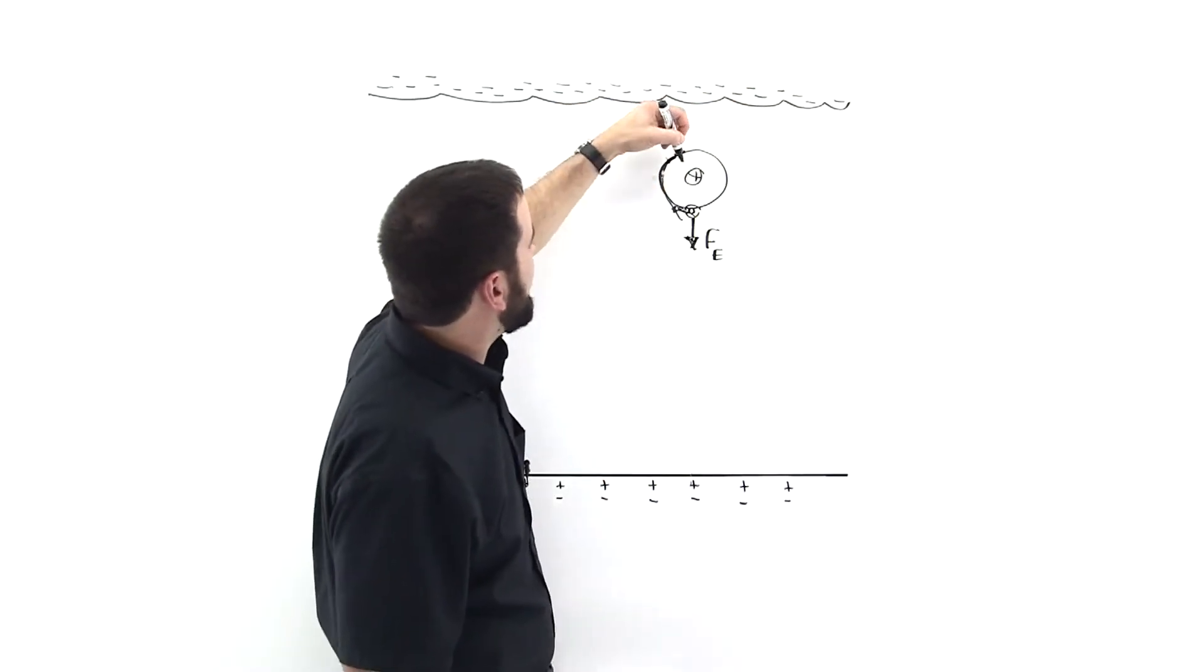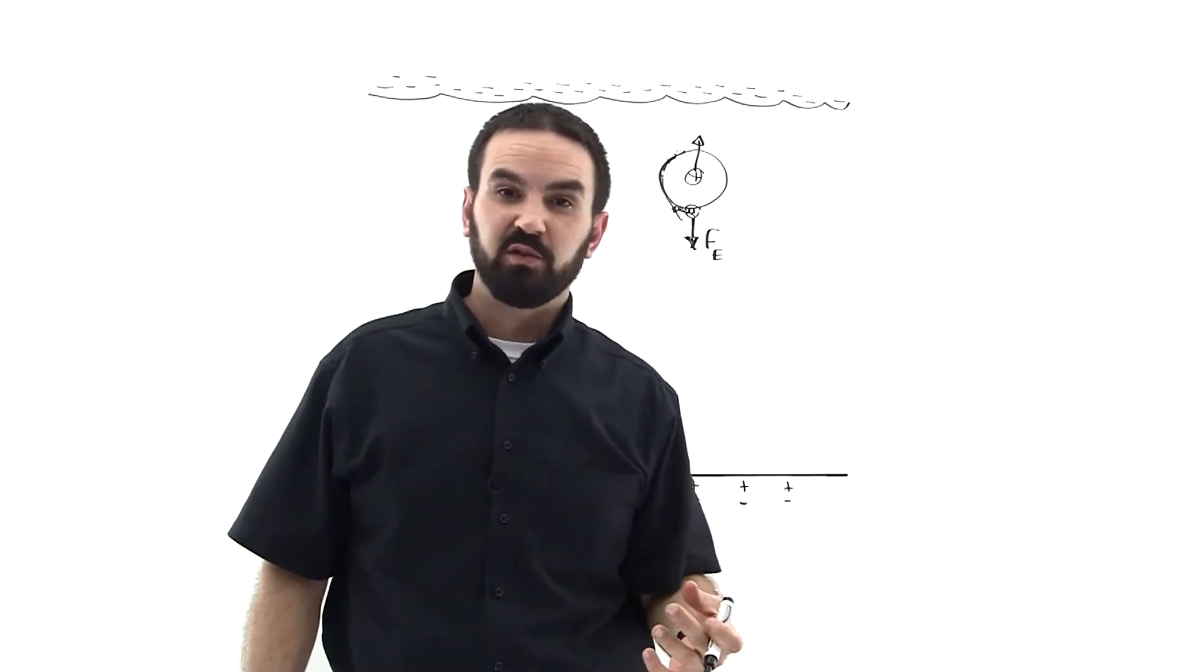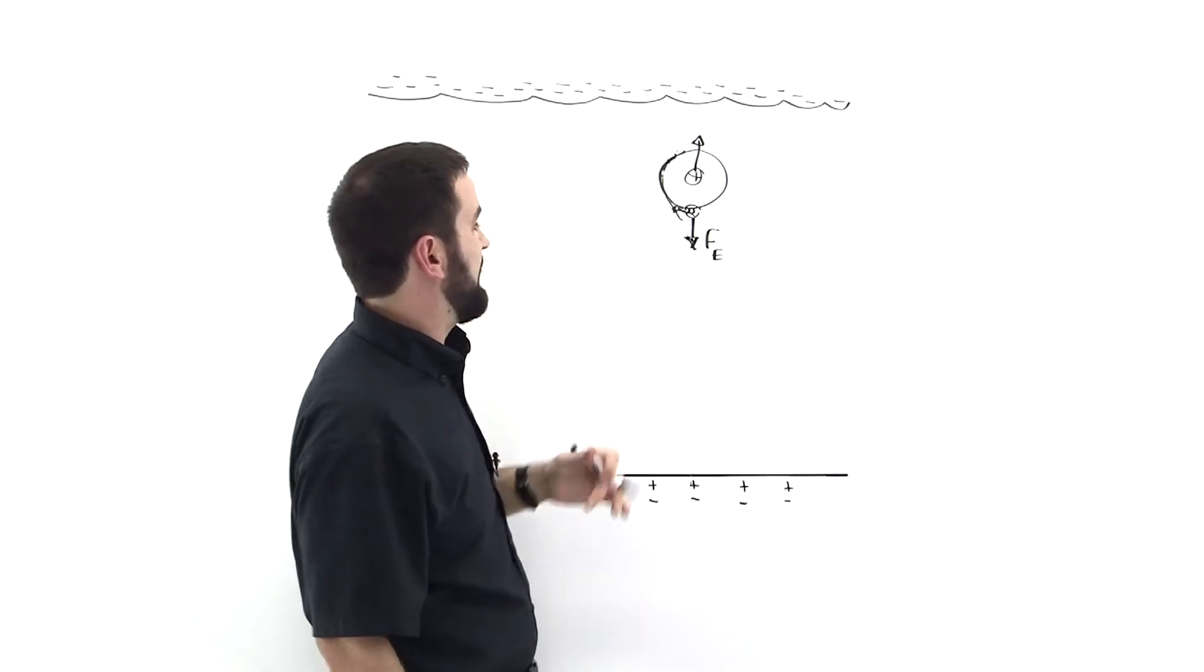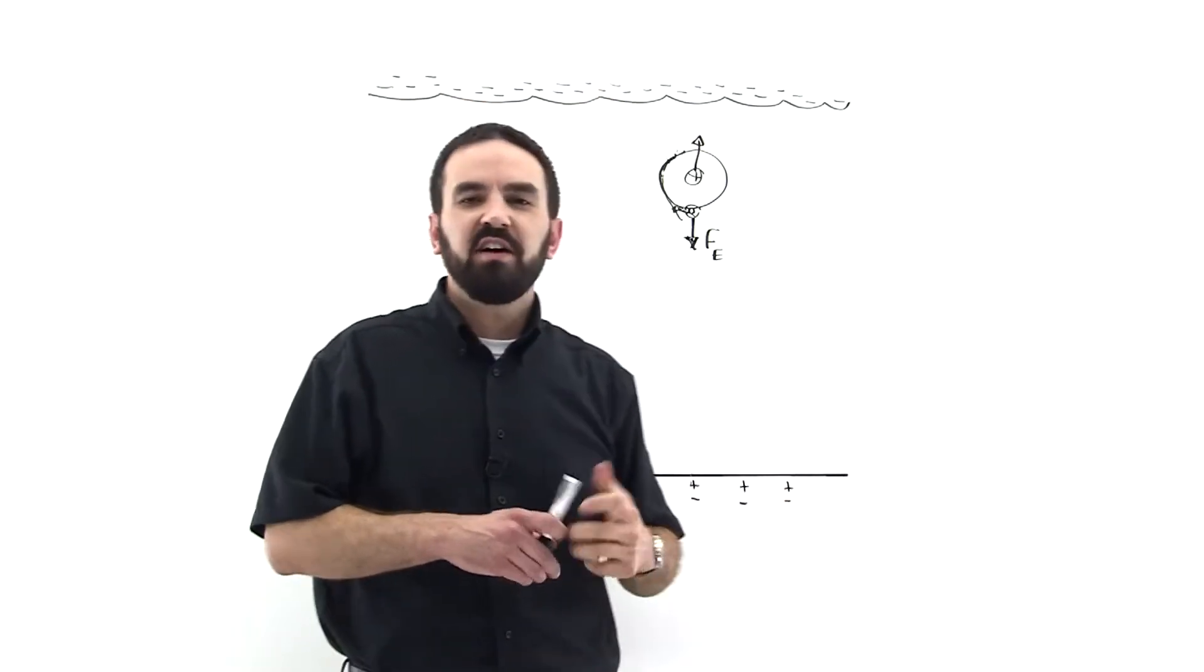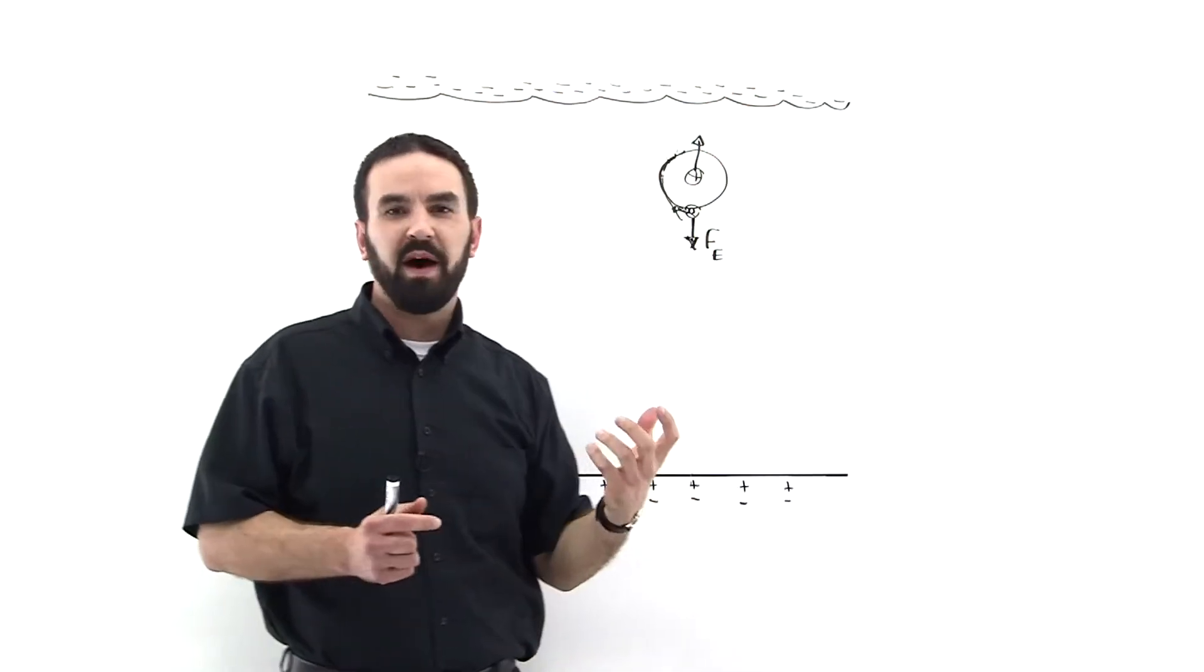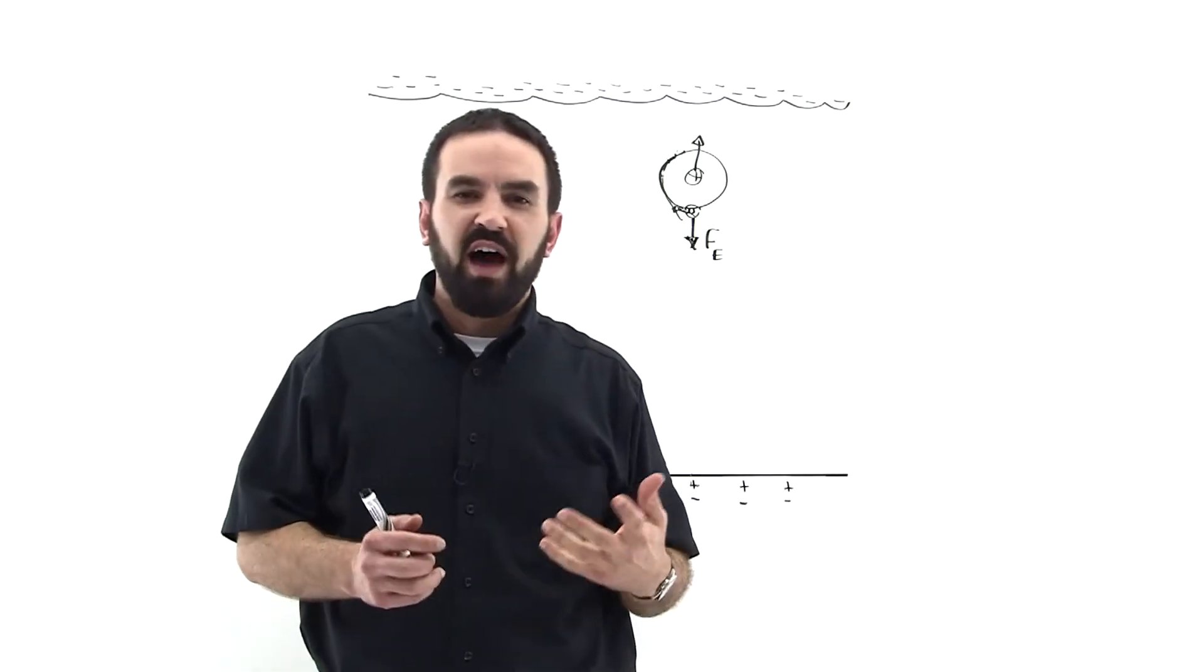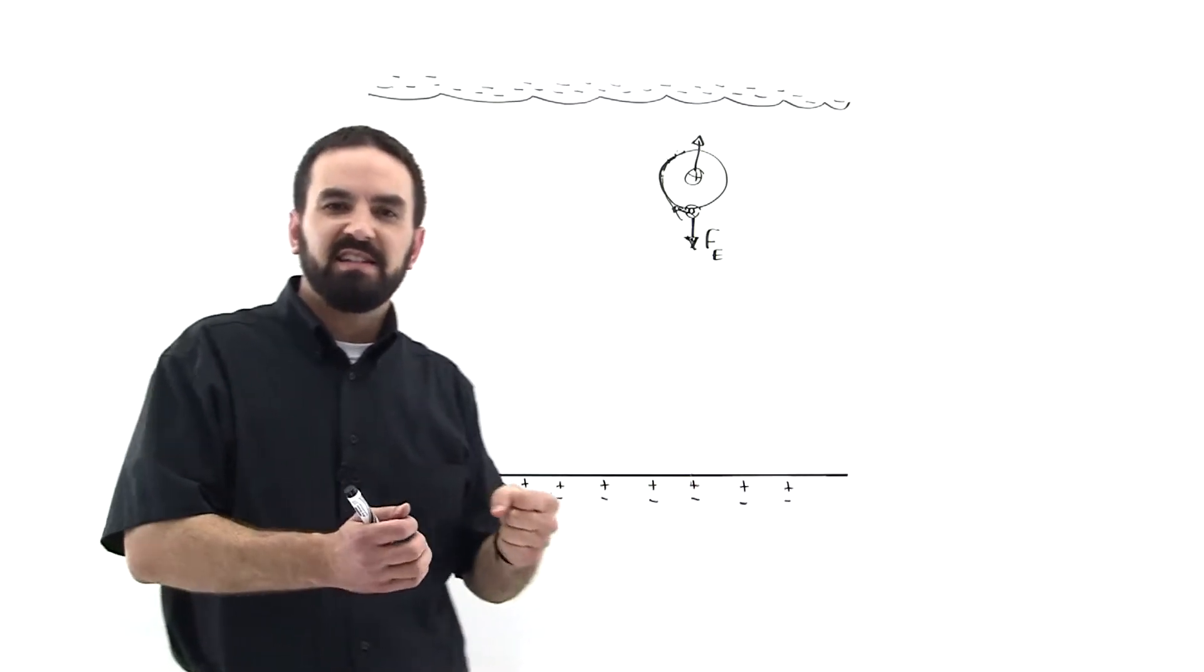This proton is being pulled on because opposites attract. So we have the negative cloud pulling this proton. When there's enough electrons, enough negative charge that builds up in the bottom of the cloud, this atom will be what is called ionized. And that is, it's torn apart.